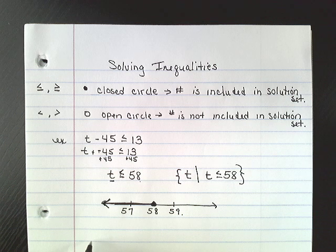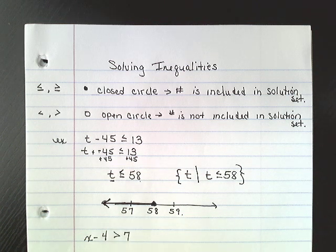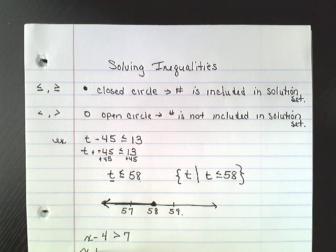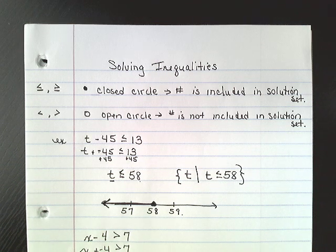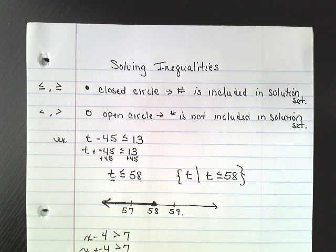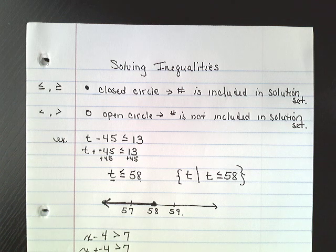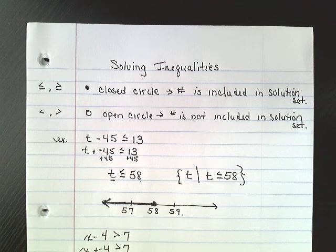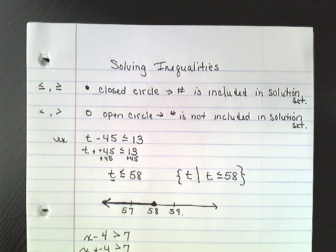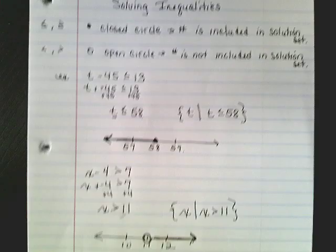Let's try x minus 4 is greater than 7. I would rewrite that as x plus negative 4 is greater than 7, then add 4 to both sides. x is going to be greater than 11. Set builder notation: for all values of x, x must be greater than 11. I'll draw a number line with 10, 11, and 12. Since x is greater than 11, that's an open circle on 11, and we shade to the right.